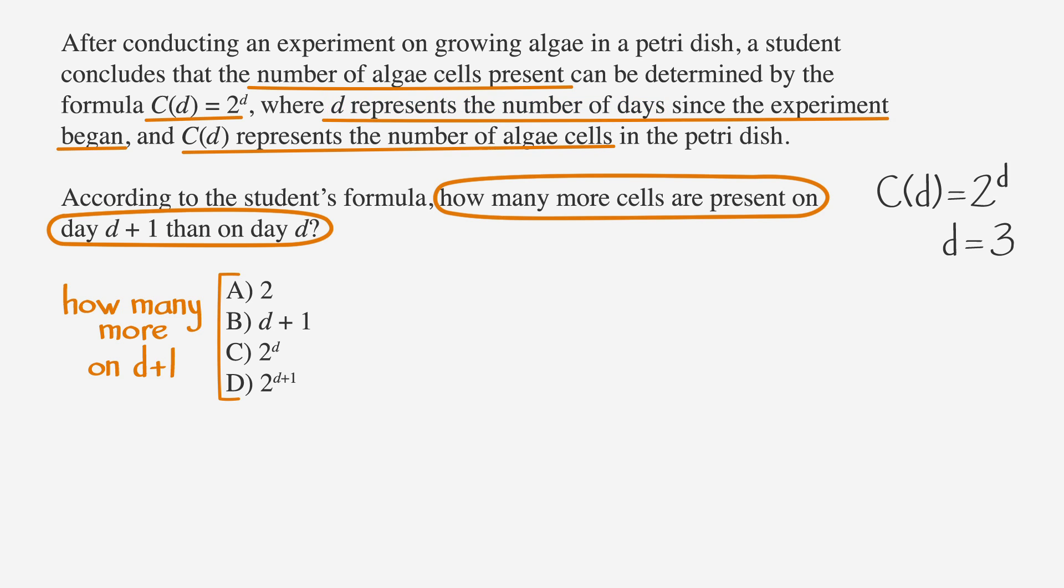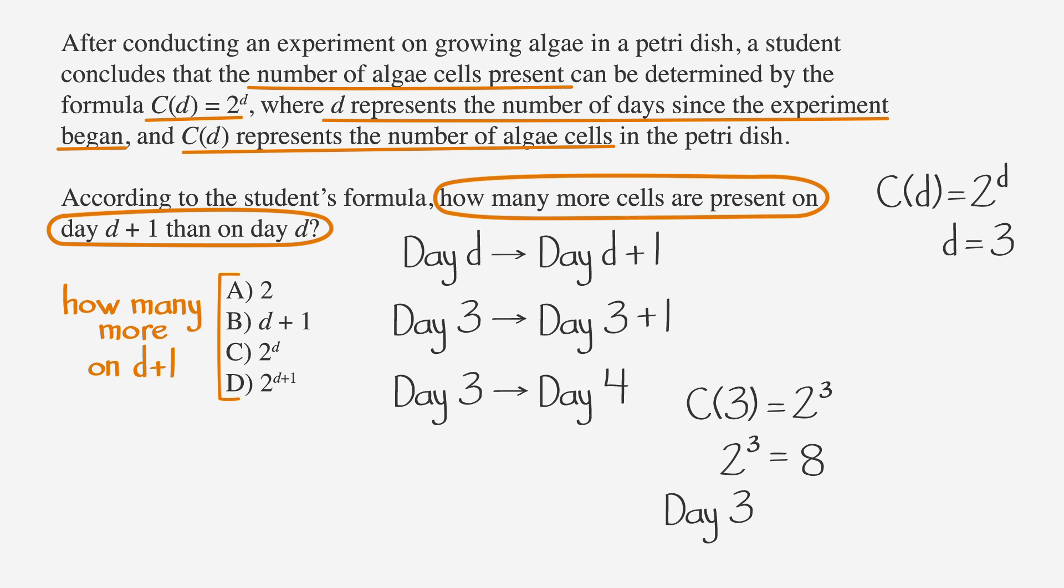Remember, d stands for days. If we're comparing day d with day d+1, we can compare day 3 with day 3+1, which means we're comparing day 3 to day 4. Now let's plug 3 into the formula. On day 3, there were 2^3 algae cells. 2^3 is 8, so on day 3, there were 8 cells. We need to compare day 3 to day 4, so let's keep going. We'll plug 4 into the formula. On day 4, there were 2^4 algae cells. 2^4 is 16, so on day 4, there were 16 cells.